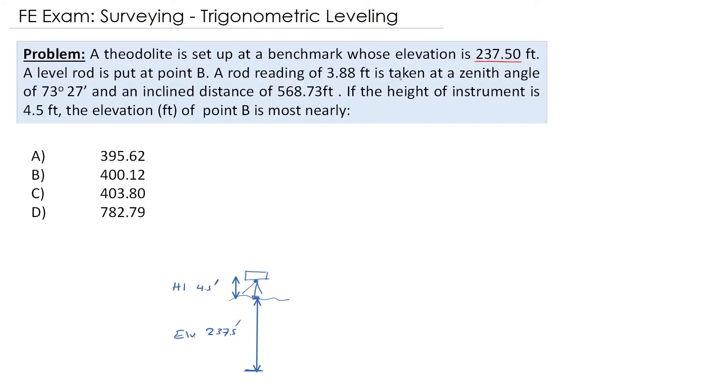Now the zenith angle is 73.27. We have two types of angles we are discussing here. The first one is the zenith angle, which we are taking from the vertical line. If this zenith angle is less than 90, that means our line of sight or our slope distance is going up, meaning we are looking upward and our object is on top. If it is more than 90 degrees, that means we are looking down.